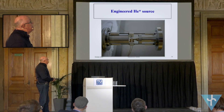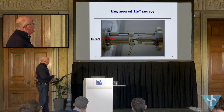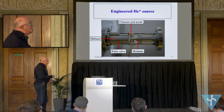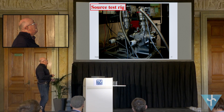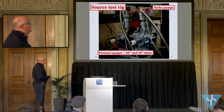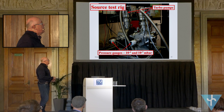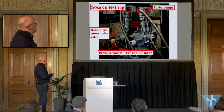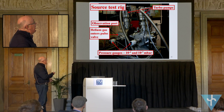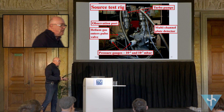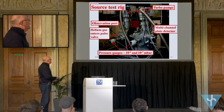Our engineering version of this — we've built this now. The helium comes in here; this inside is the pulse valve. This is the filament and the anode, and there you see the skimmer — the beam will come out the back end there. We've got this mounted in a test rig. Here are the pumps at the top, pressure valves. We need to monitor this carefully because we need a pressure difference, and these are the pressures we're working at. The helium enters from this side and the device sits in this space here, and then the beam comes out.